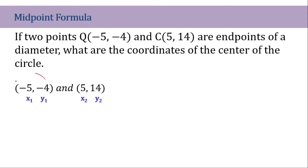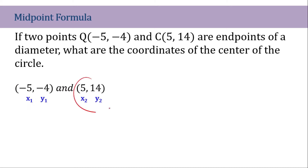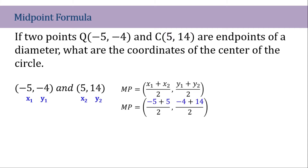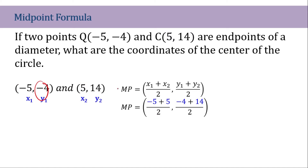So this one will be my point 1, that's why it is x sub 1 and y sub 1. This will be our point 2, because that makes it x sub 2 and y sub 2. Now after this, I will write the midpoint formula and substitute all the values that I have. So that is negative 5 plus positive 5 over 2, and for the y, negative 4 plus 14 over 2.